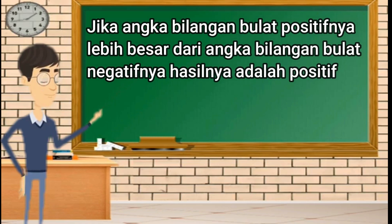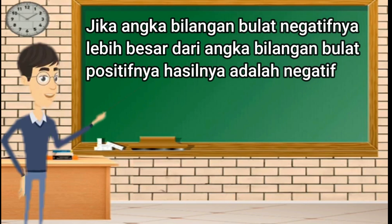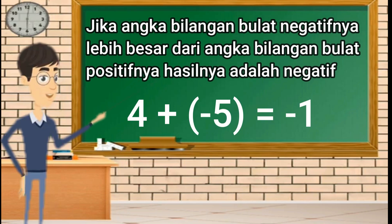Contoh: 4 ditambah negatif 2 sama dengan positif 2, karena 4 bilangannya lebih besar dari angka bilangan negatif 2 sehingga hasilnya adalah positif. Jika angka bilangan bulat negatifnya lebih besar dari angka bilangan bulat positifnya, hasilnya adalah negatif. Contoh: 4 ditambah negatif 5 sama dengan negatif 1, karena negatif 5 lebih besar dari positif 4.